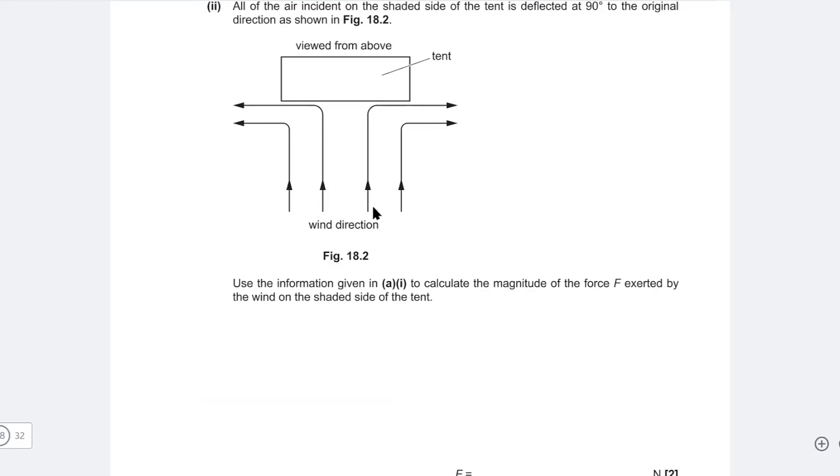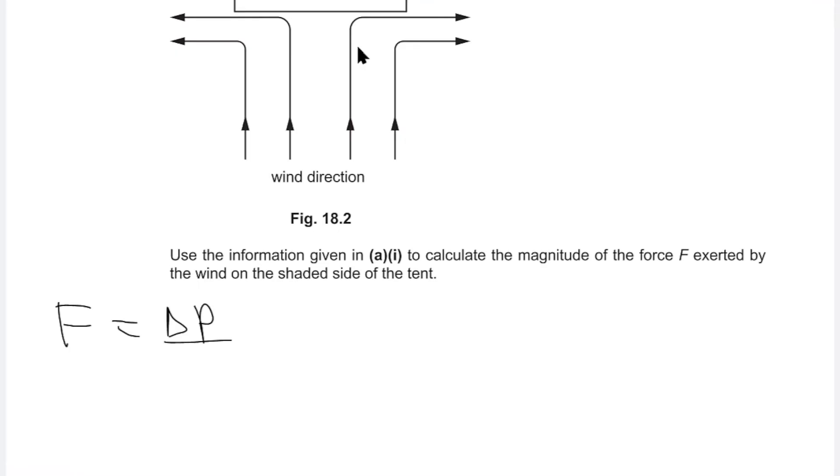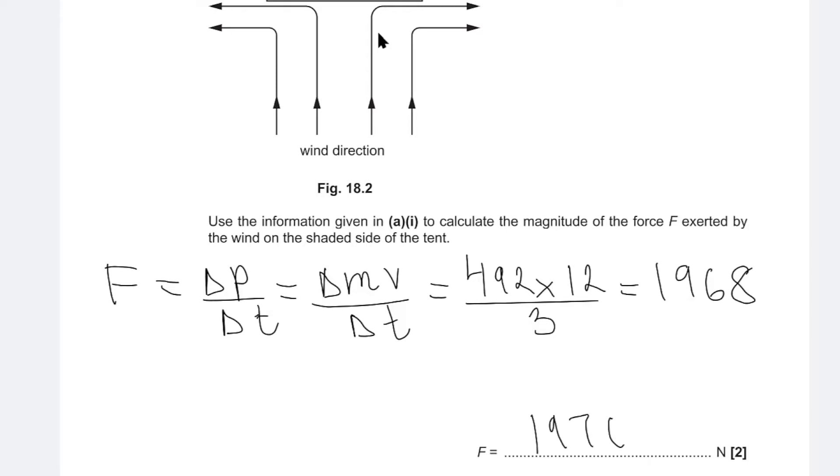For the next part, we need to calculate the force exerted by this column of air hitting the tent. Well, for those questions, we can't just use F is equal to Ma, we're just going to use F is equal to the rate of change of momentum, i.e. delta p divided by delta t. Okay, now our change of momentum is really caused by the amount that's of mass that's changing. So this will be equal to delta m times v divided by the elapsed time. The mass we calculated to be around 492. The speed was 12 meters per second and all of this happens over three seconds. So putting all of these into a calculator, we're going to get 1968. Now let's put these up to two or three significant figures. So we're going to call this 1970 newtons.